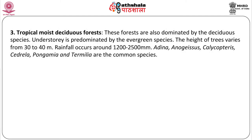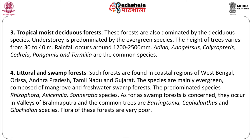Tropical moist deciduous forest. These forests are also dominated by the deciduous species. Understory is predominated by the evergreen species. The height of trees varies from 30 to 40 meters. Rainfall occurs around 1200 to 2500 millimeters. Next is the littoral and swamp forest. Such forests are found in coastal regions of West Bengal, Orissa, Andhra Pradesh, Tamil Nadu and Gujarat. The species are mainly evergreen, composed of mangrove and freshwater swamp forests.